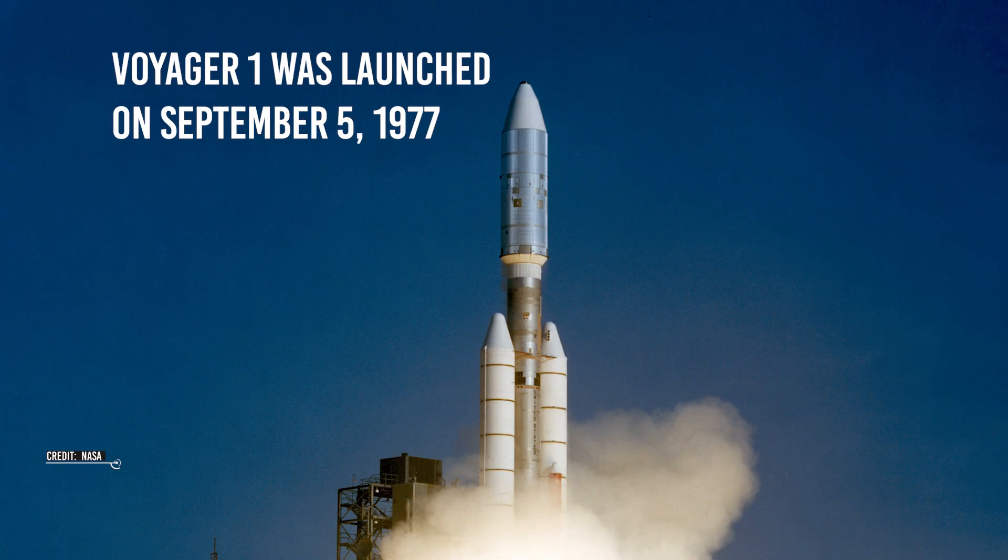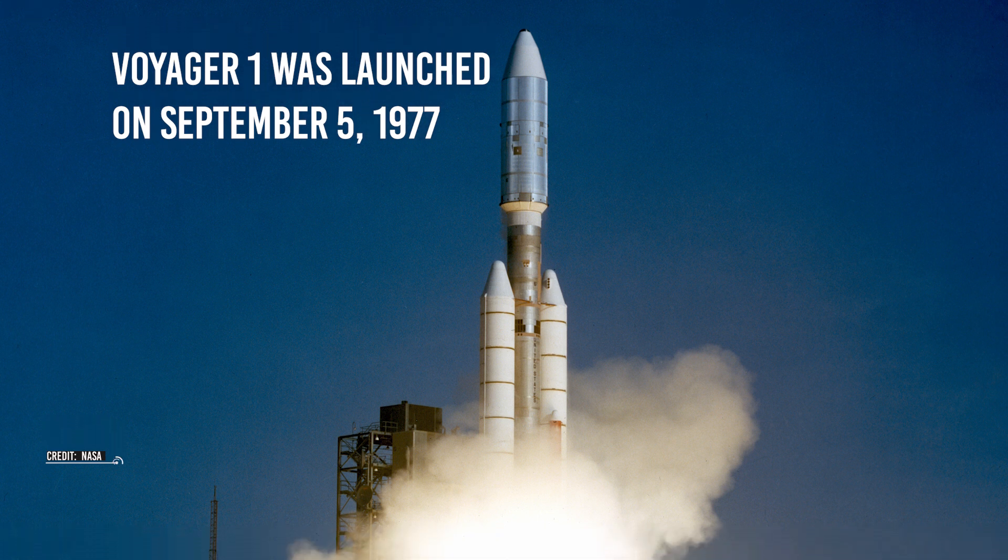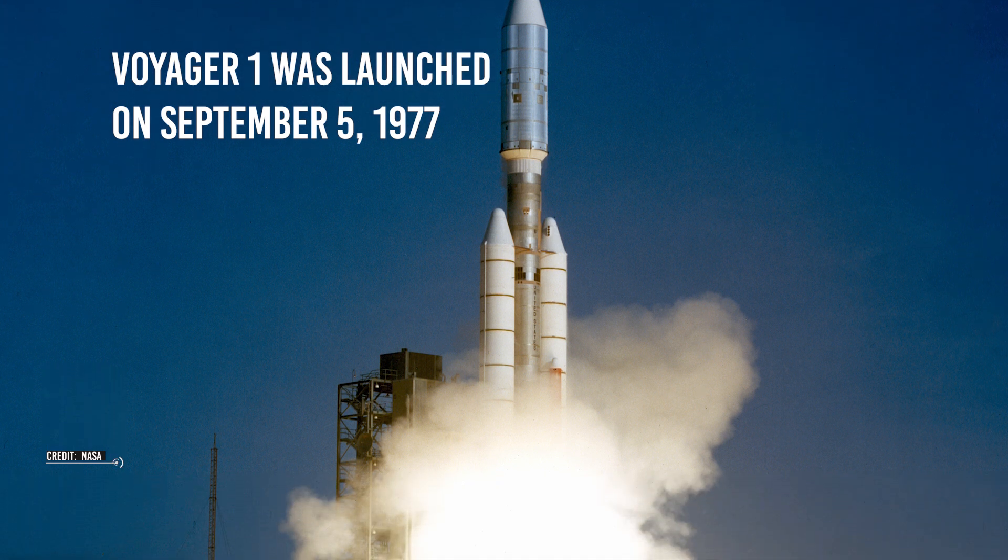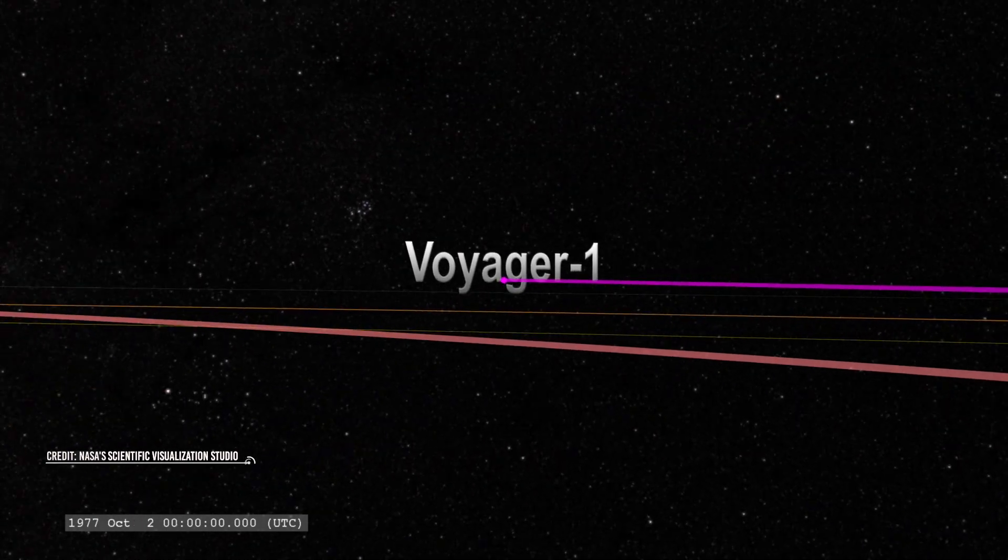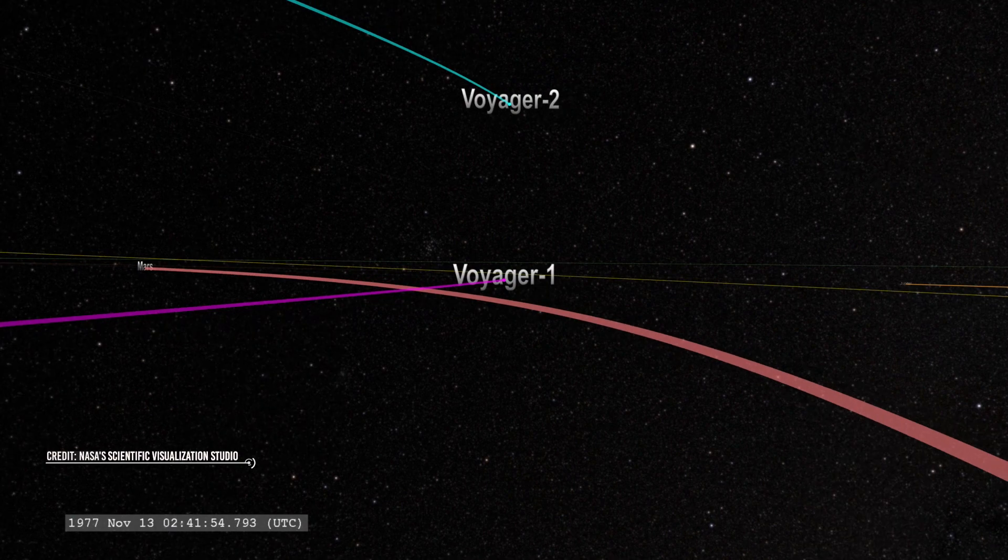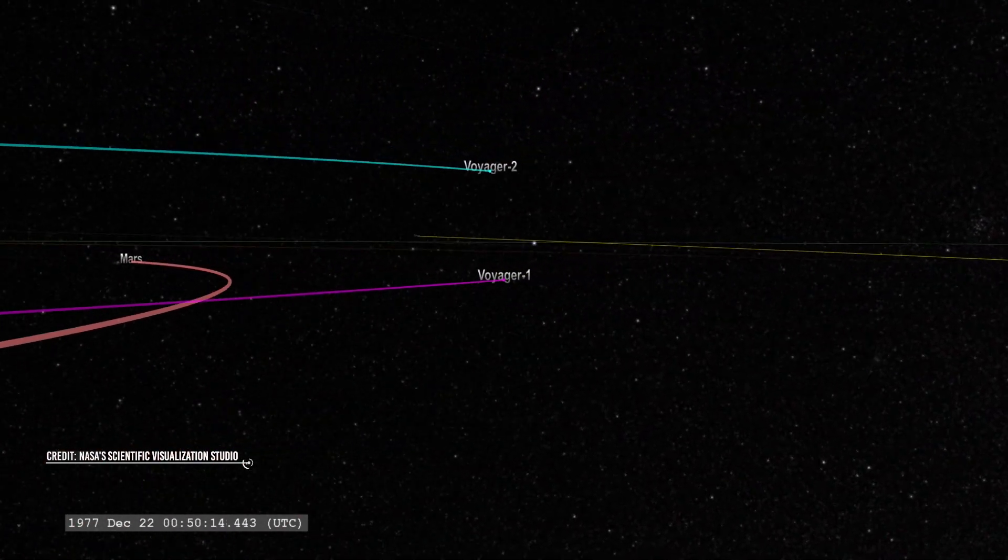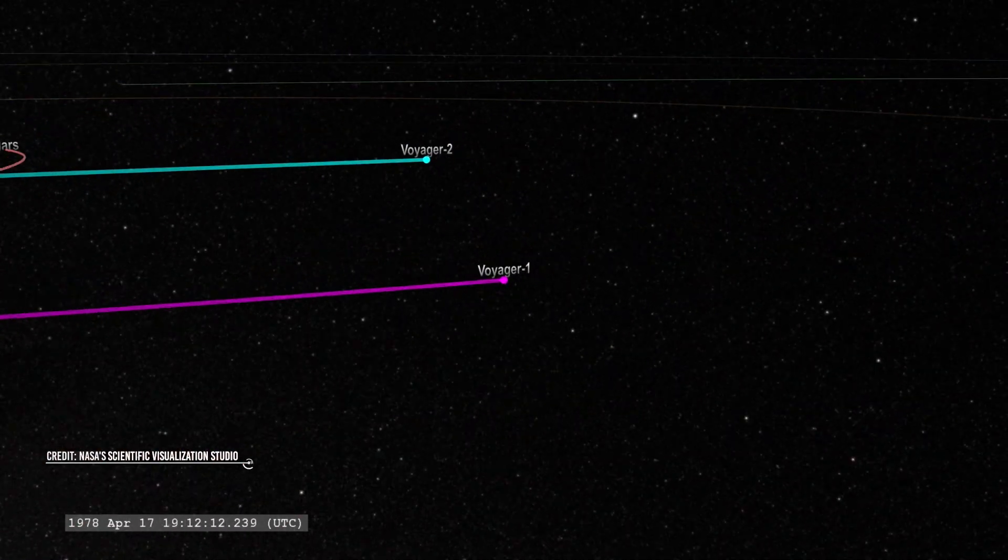Voyager 1 was launched on September 5, 1977, nearly two weeks after Voyager 2. The two probes completed a historic grand tour of the outer planets, providing scientists with some of the first close-up views of Jupiter, Saturn, Uranus, and Neptune, and their moons.